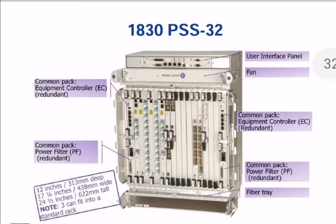Hello friends, this is the 1830 PSS 32 Nokia DWDM. As you have seen, the first panel is the user interface panel, the second one is the fan, the third one is the equipment controller card, and the fourth one is the power filter. In the last panel you have seen the fiber tray, and in the fiber tray the fibers have been routed properly.